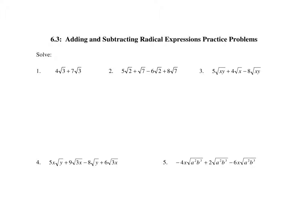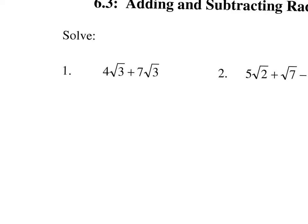In this video we're going to do some practice problems for adding and subtracting radical expressions. The first question says 4 square root of 3 plus 7 square root of 3. If you remember correctly, we can only add radical expressions that have like radicands, and these are both the square root of 3. To add them we just add the coefficients, so 4 plus 7 is 11 square root of 3.